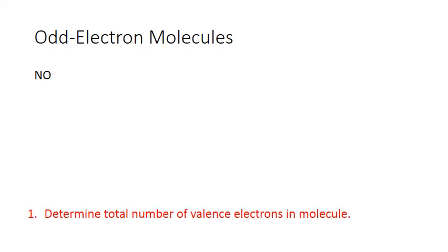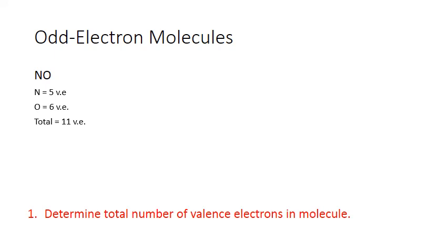Our first step is to determine the total number of valence electrons in the molecule. Nitrogen is from column 15, so that's five valence electrons, and oxygen is in column 16, that's six. Five plus six gives us a total of eleven valence electrons — this is an odd electron molecule.